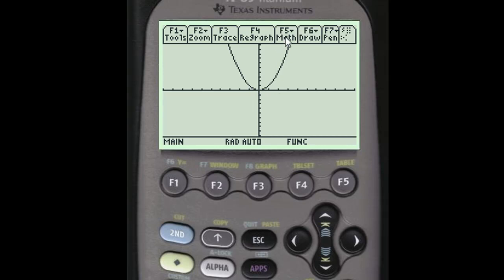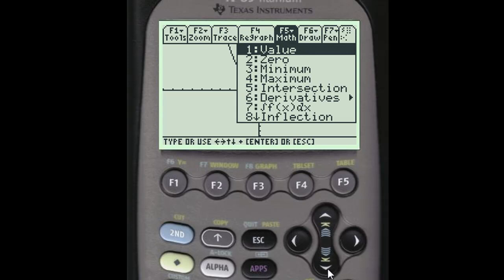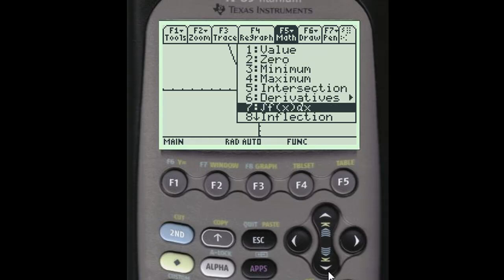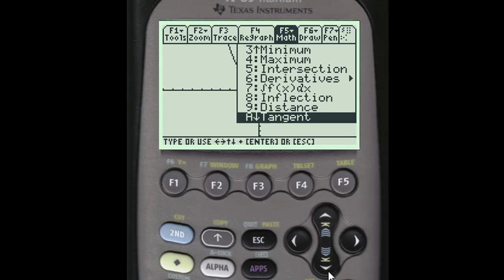In the F5 math menu, scroll down until you come to tangent, which is option A. Highlight it and press enter.